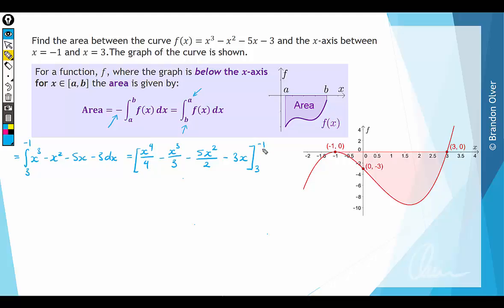Our fundamental theorem of integral calculus says that we can evaluate that by substituting in negative 1 to the anti-derivative and then subtracting away 3 substituted into the anti-derivative.